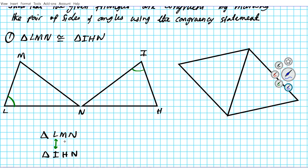Moving on, M and H are in the same position — they are corresponding angles, which means they're congruent. We mark them with two arcs because we don't know if angle M and angle L are congruent, so we use a different marking. Then lastly we have angle N and angle N for both triangles, so mark angle N with three arcs in each triangle. So we've marked the angles to show congruency.